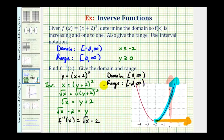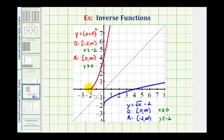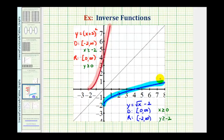Let's go ahead and finish by verifying this graphically. We know that if we graph function f on the restricted domain and we graph the inverse function on its domain, the two functions should be symmetrical across the line y equals x. Here's the graph of the original function on the restricted domain, and here's the graph of the inverse function graphed over its domain. We can see that these two graphs are symmetrical across the line y equals x.